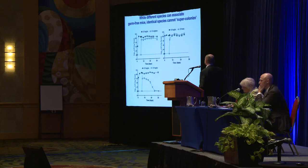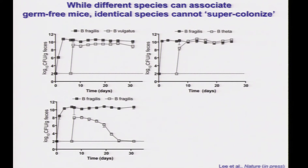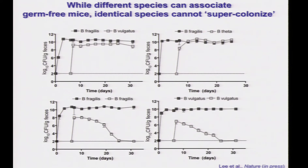The surprise came when we took an animal mono-associated with Bacteroides fragilis and then challenged that same animal with the isogenic strain — the exact same strain — just marked by an antibiotic-resistance gene. In a mono-associated mouse, Bacteroides fragilis does not colonize upon challenge. We initially thought it was the antibiotic-resistance gene, so we swapped those around and used other methods. Every single time, Bacteroides fragilis challenged into a Bacteroides fragilis mono-colonized animal does not colonize. There's competition within an organism but not between organisms. We don't see the same effect with E. coli or Enterococcus faecalis — something specific about Bacteroides mediates this phenotype.